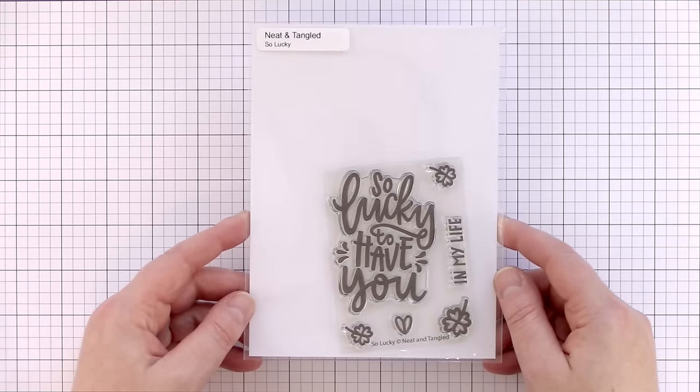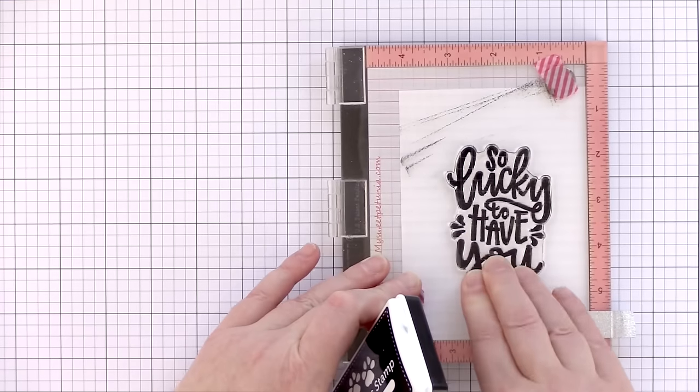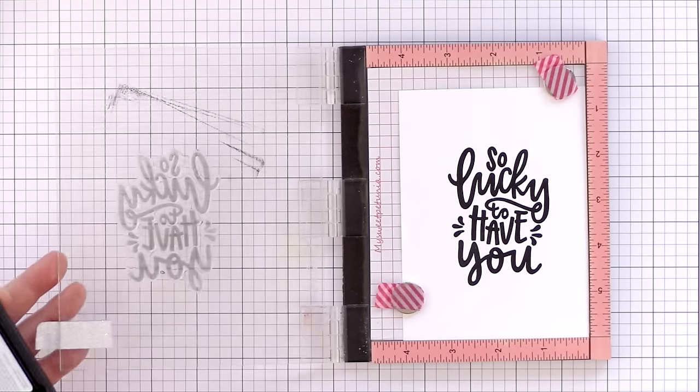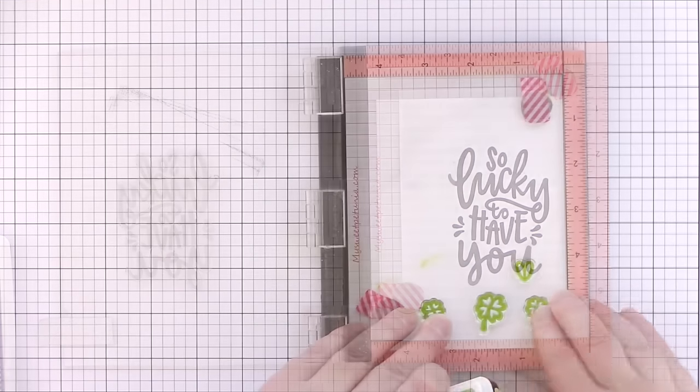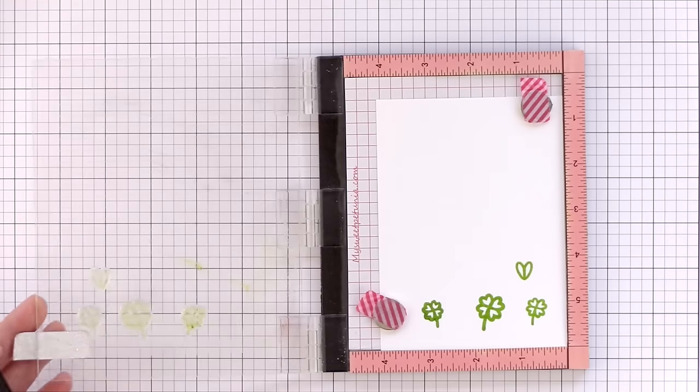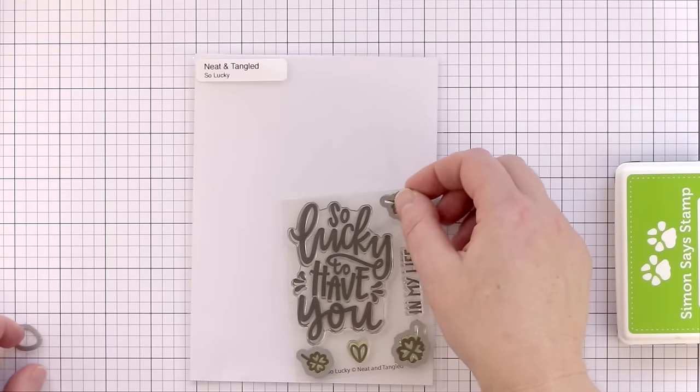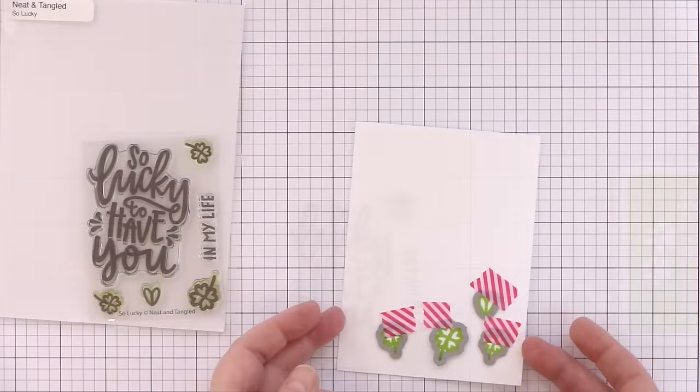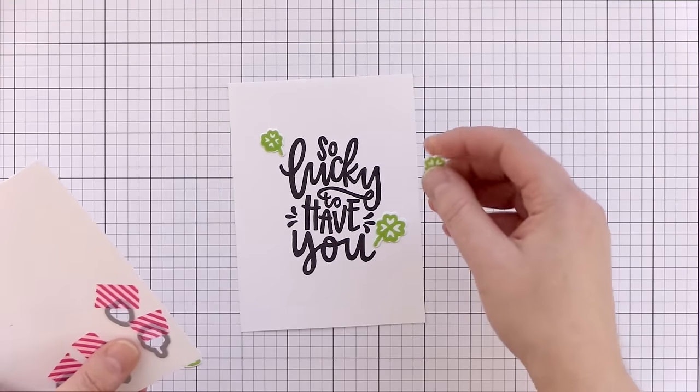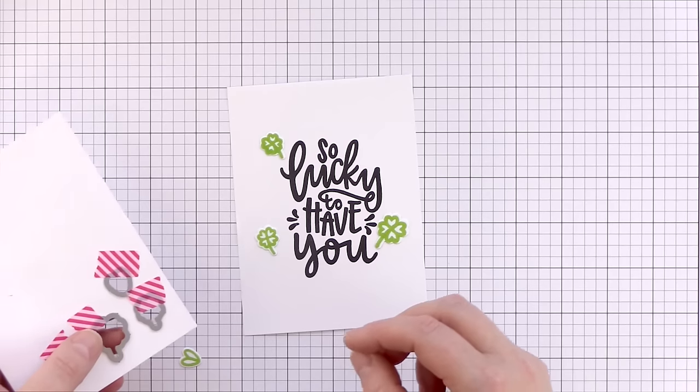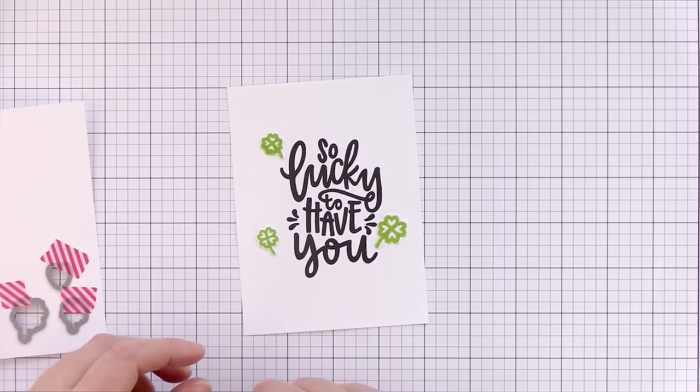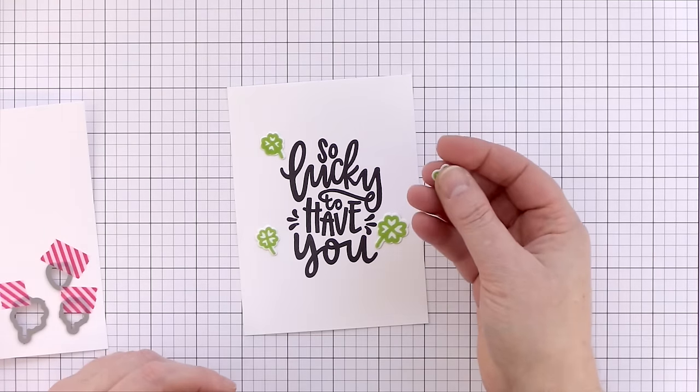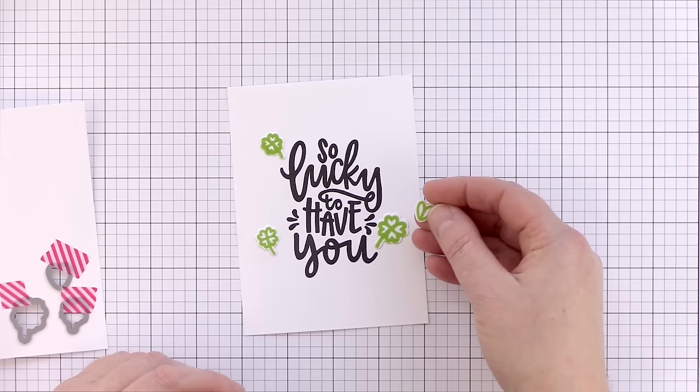The lovely sentiment in the So Lucky set is a great size to be a focal point for a card. Here I've stamped the sentiment in black ink on a white panel of card and then stamped the accompanying four-leafed clover images in Jelly Bean ink. Each of the clover images has a matching die. I've attached the dies to washi and then ran them through the die-cutting machine, and these would look lovely dotted around the sentiment. I think the smallest image from the set could be used to cut individual segmented leaves to create a larger four-leafed clover.